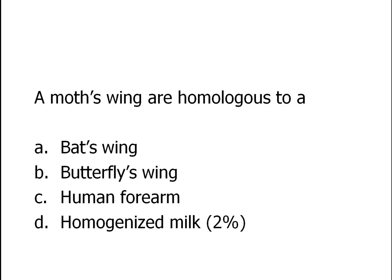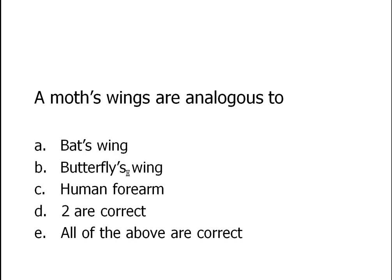Remember, homologous means the same internal structures but not necessarily the same function. Moth's wings are homologous to a butterfly's wings. Moth's wings are analogous — same function but different internal structures — to bat's wings, which also allow flight. A human forearm doesn't do the same thing as a moth's wings, so they're not analogous. You could argue butterfly wings and moth's wings are analogous, but the best answer is bat wing.